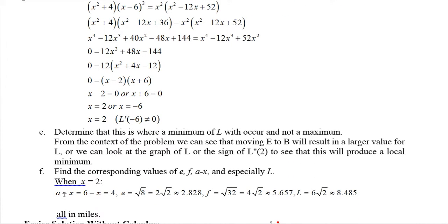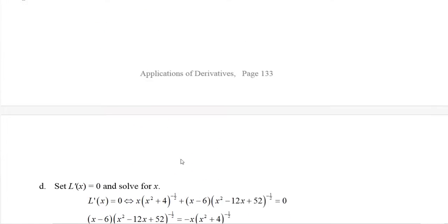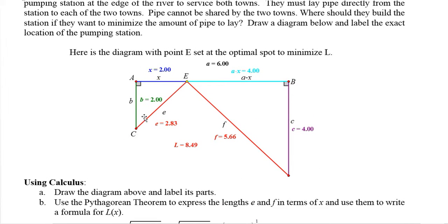Now we would take those and plug them in. 6 minus x is 4. These lengths of pipe are 2 square root of 2 for the length E and 4 square root of 2 for F, for a total length of 6 square root of 2 or about 8.5 miles of pipe.